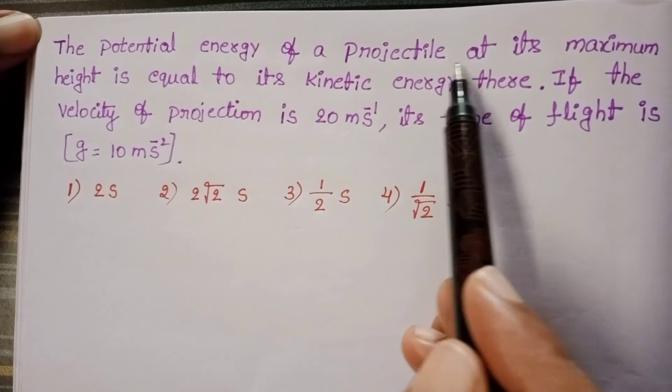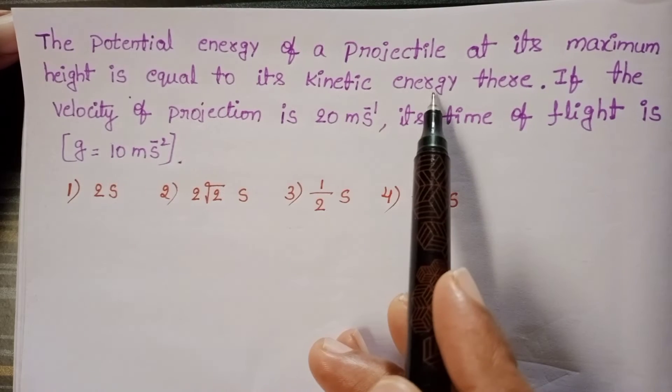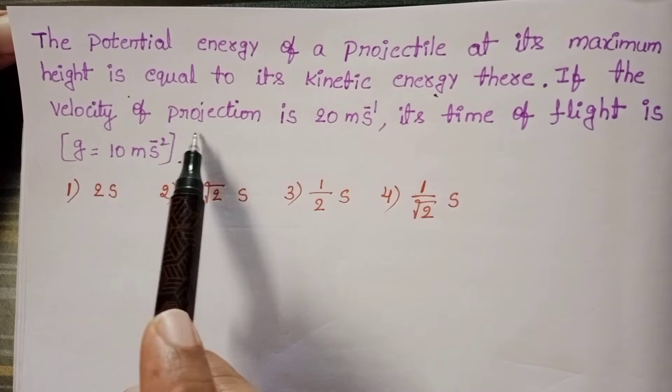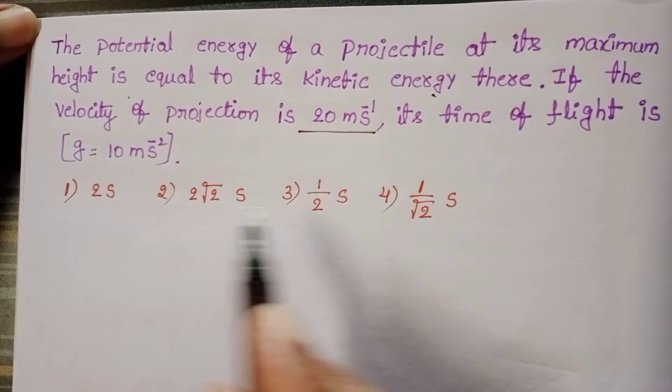The potential energy of a projectile at its maximum height equals its kinetic energy. If the velocity of projection is 20 meters per second, the time of flight is: